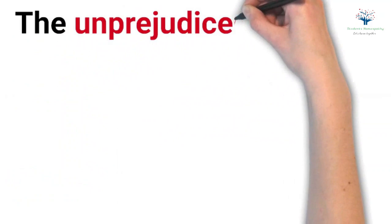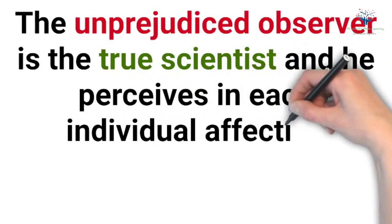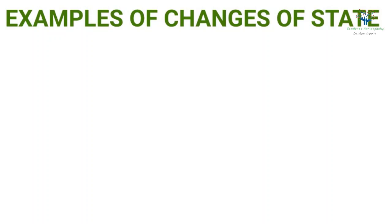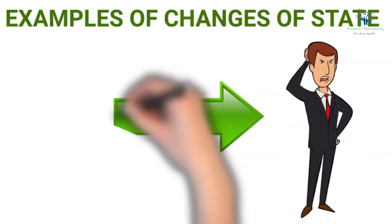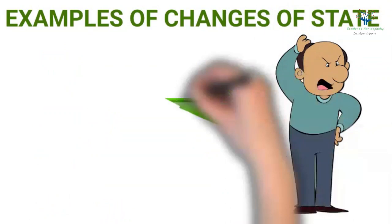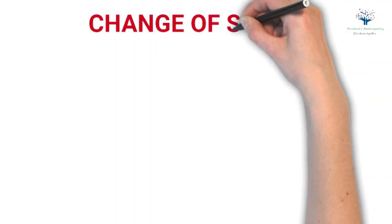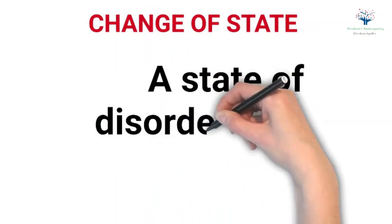The unprejudiced observer is the true scientist and he perceives in each individual affection nothing but the changes of state. Now let's discuss some examples of changes of state: often being in a state of confusion, though the mind operated well before; getting irritable easily, though he was usually pleasant; becoming sad, whereas he was pleasant previously. So, what does this change of state mean? The change of state means state of disorder or want of harmony.